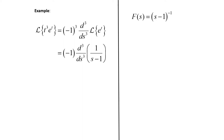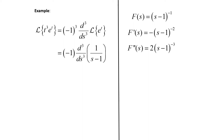Now we just need to evaluate that third derivative. F(s) is (s minus one) to the negative first power. Taking the first derivative: bring the negative one down, giving negative (s minus one) to the negative two. The second derivative brings the negative two down, giving positive two times (s minus one) to the negative three. For the third derivative, bring the negative three down, giving negative six times (s minus one) to the negative four.